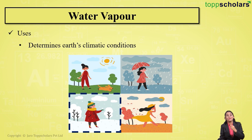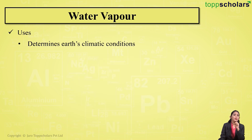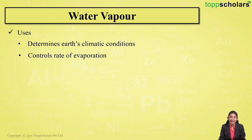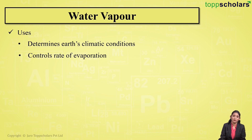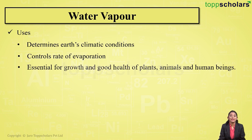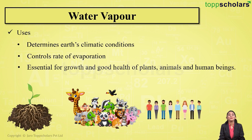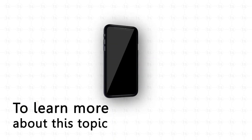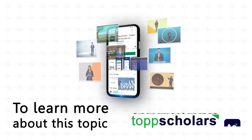Water vapor also helps to control the rate of evaporation from the bodies of plants and animals. Through plants, this is controlled by transpiration, which is the process wherein plants lose water in the form of water vapor. In animals, it is controlled through respiration. Water vapor is also essential for the growth and good health of plants, animals, and human beings.